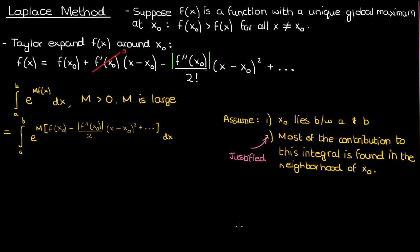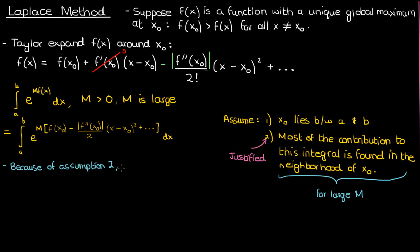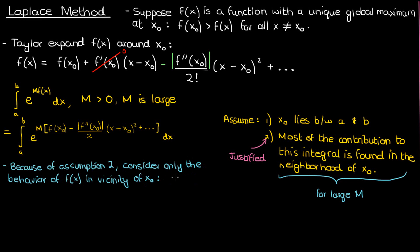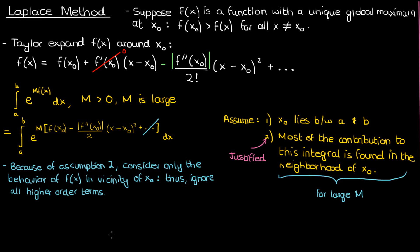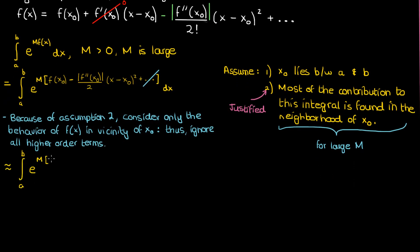Now if we go back to our integral involving f of x, this explanation should tell you why I made the second assumption. If capital M is sufficiently large, then this assumption will be quite justified. Since most of the contribution to this integral is in the neighborhood of x0 for large capital M, I can consider only the behavior of f of x in the nearby vicinity of x0, because that's all I need to approximate this integral with good accuracy. If I do this, then I can ignore all higher order terms and only consider f of x until the quadratic term in the Taylor expansion.